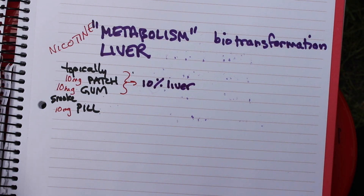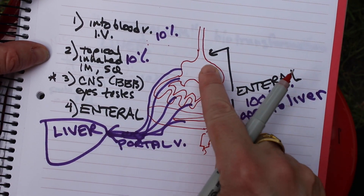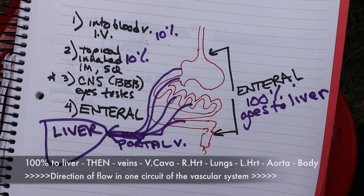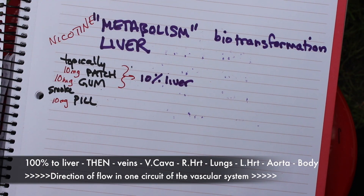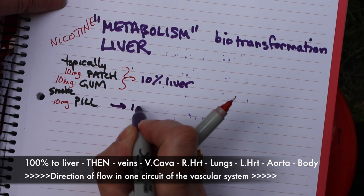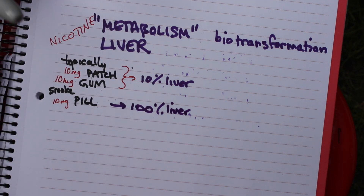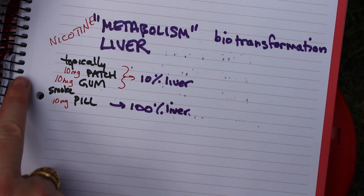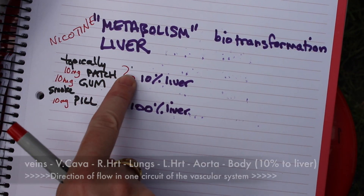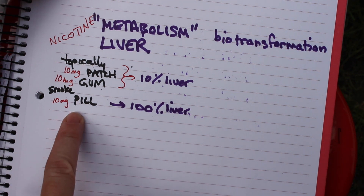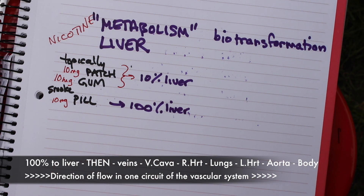Now if we give the drug as a pill — as shown in this picture — once you swallow it, all the nicotine that's absorbed goes directly to the liver first. It doesn't get to go anywhere else. The first place it goes is the liver, and then from the liver it goes into veins, vena cava, right heart, lungs, left heart, body. So if you take it as a swallowed pill, 100% of the drug goes to the liver on the first pass. Whether given topically, inhaled, or IV, only 10% hits the liver on that first pass. But with a pill, 100% goes through the liver before it even gets back to your heart, lungs, and body.